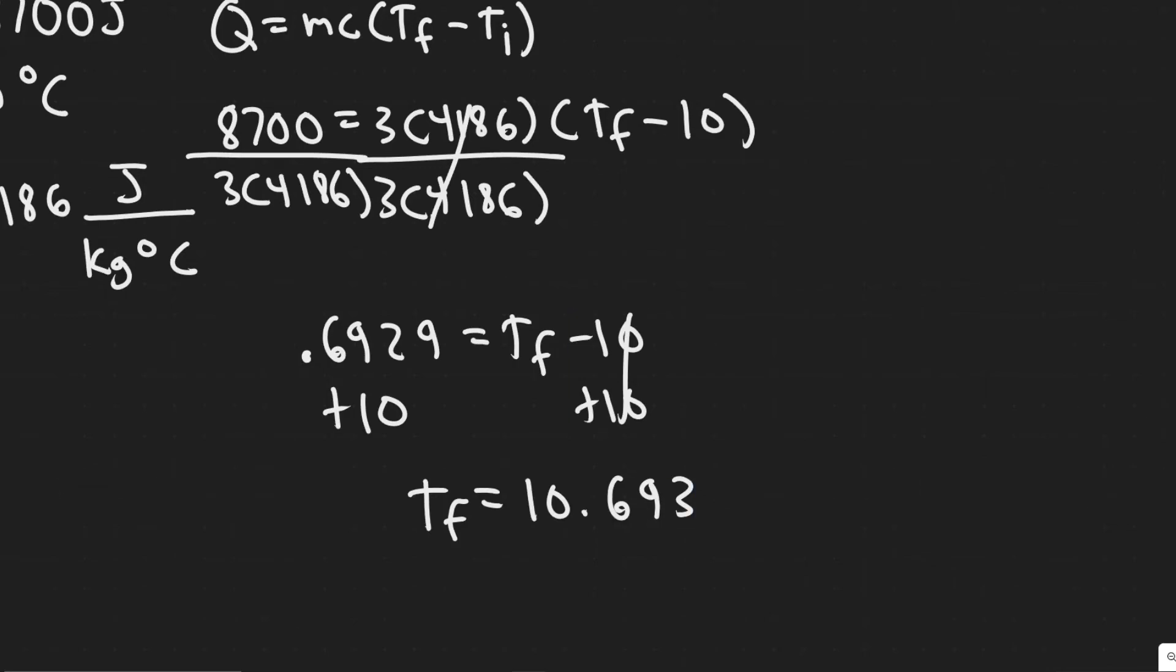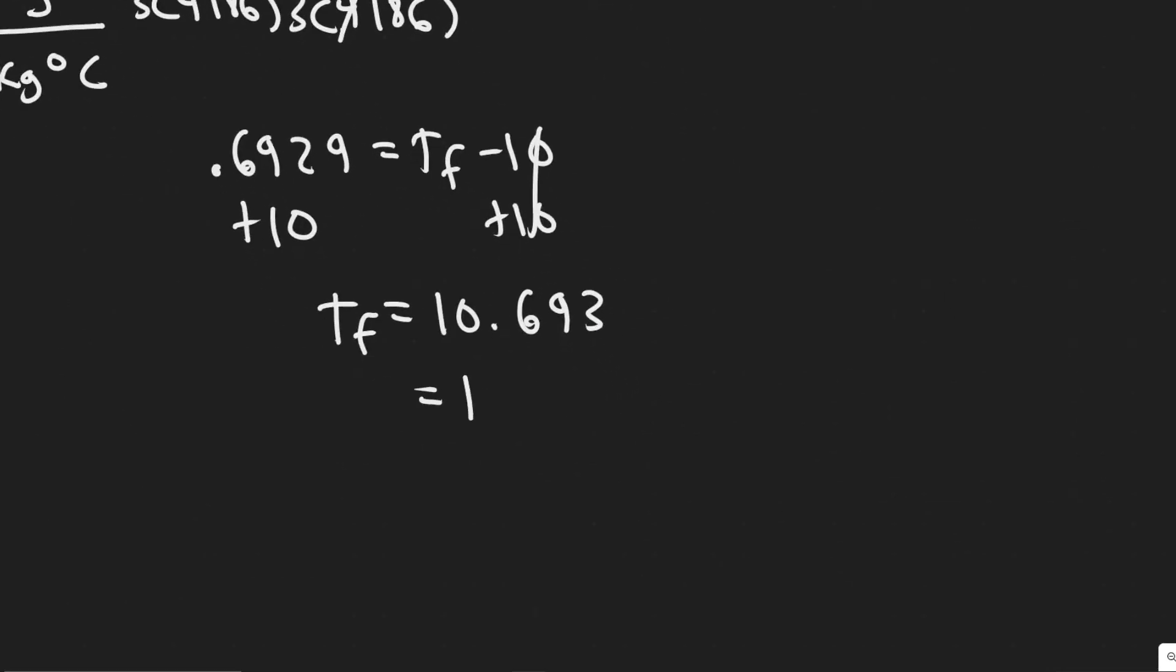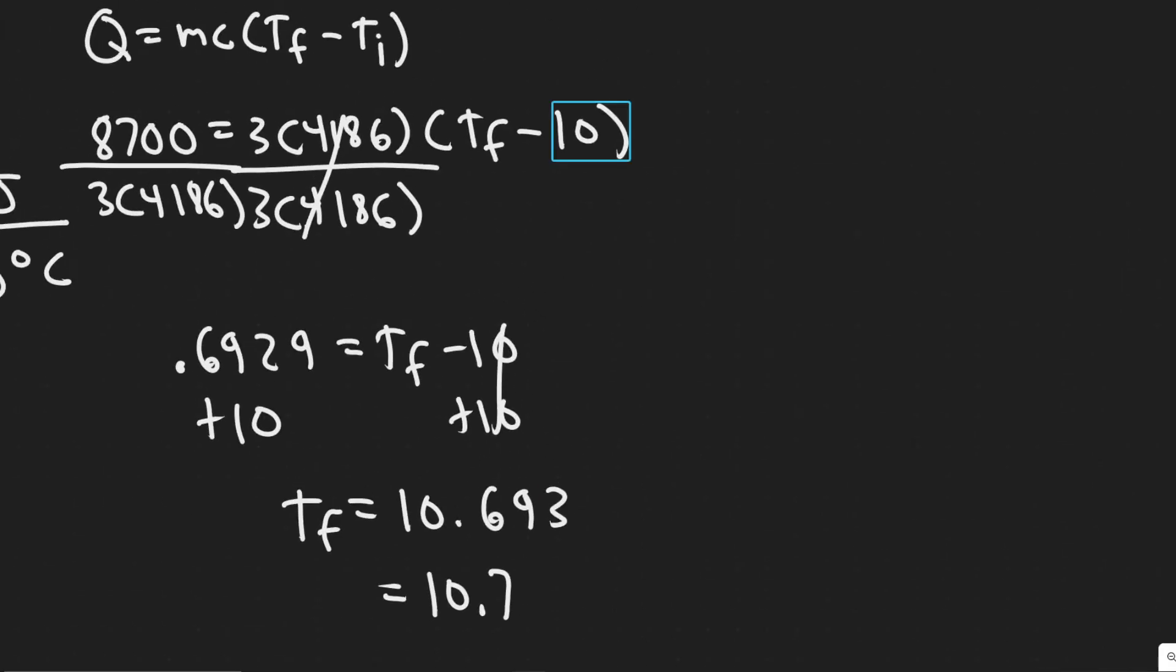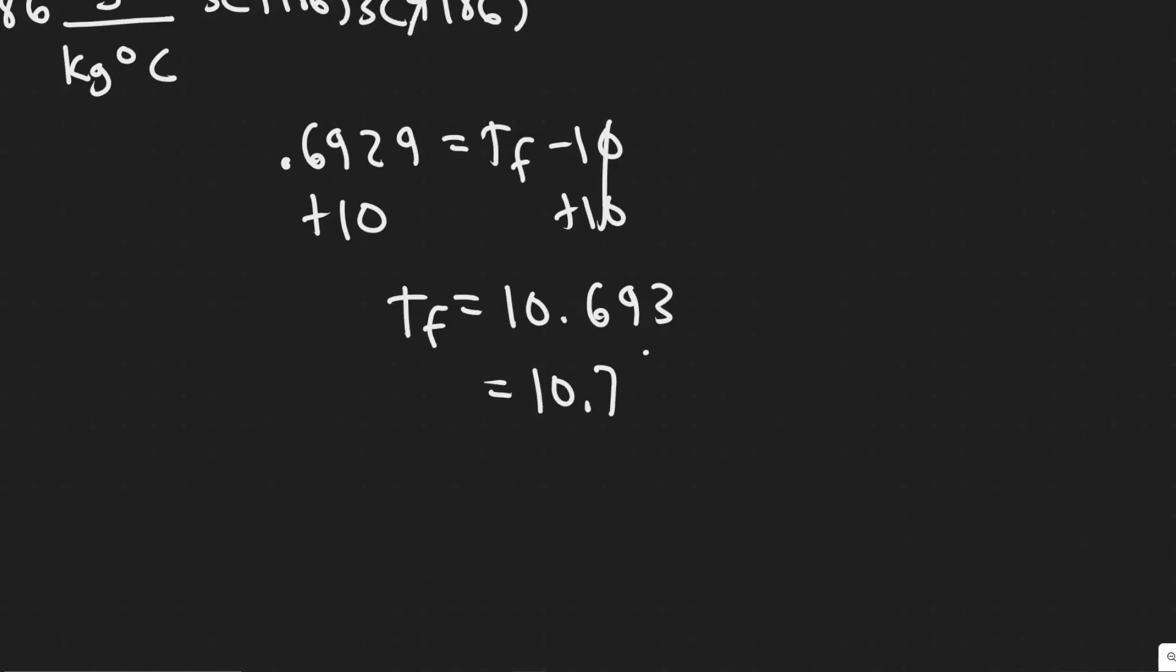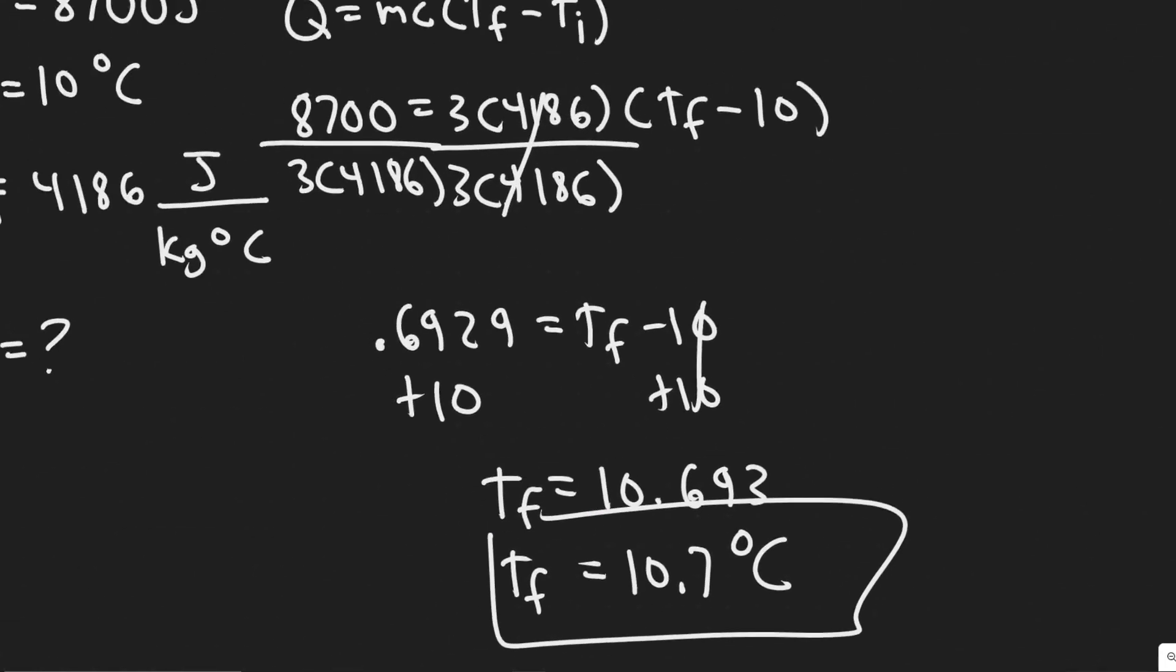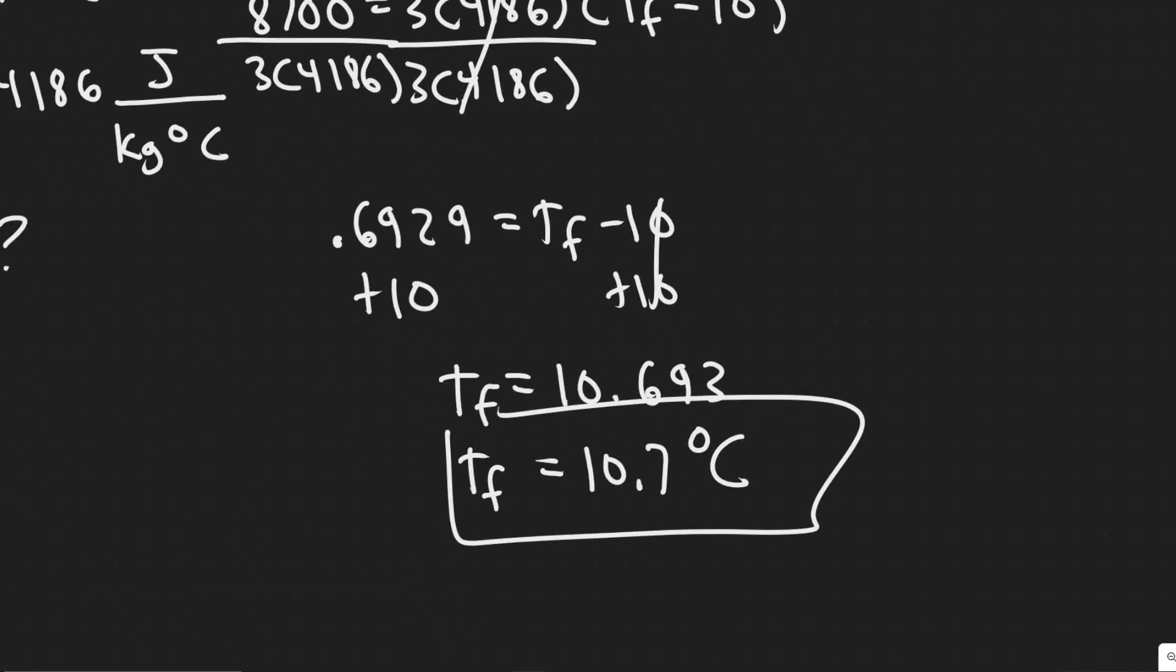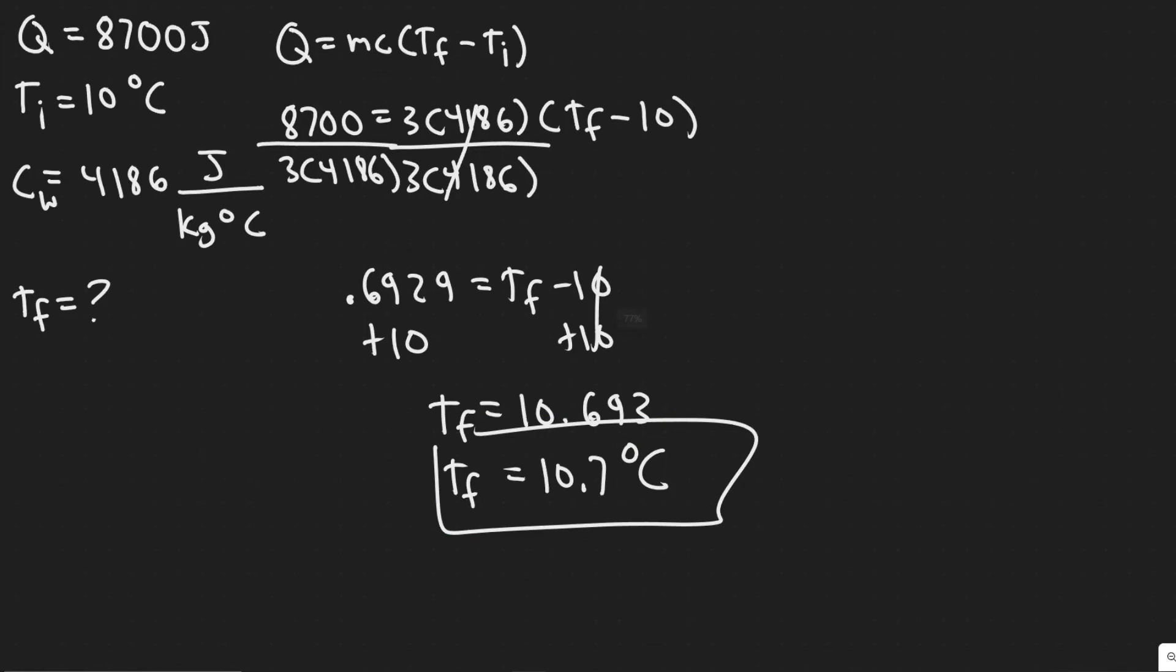So 10.693, you can just round to 10.7 or however you'd like to. Keep in mind, the units of this are going to be the same as the units for the other temperature we plugged in, which was Celsius. So the final temperature when we add 8,700 joules of heat, you're going to get 10.7 degrees Celsius.